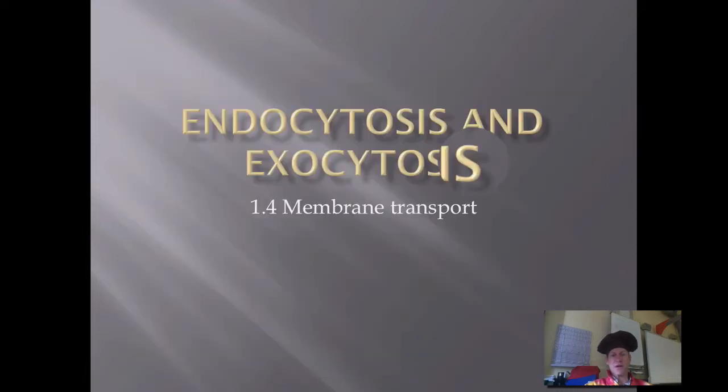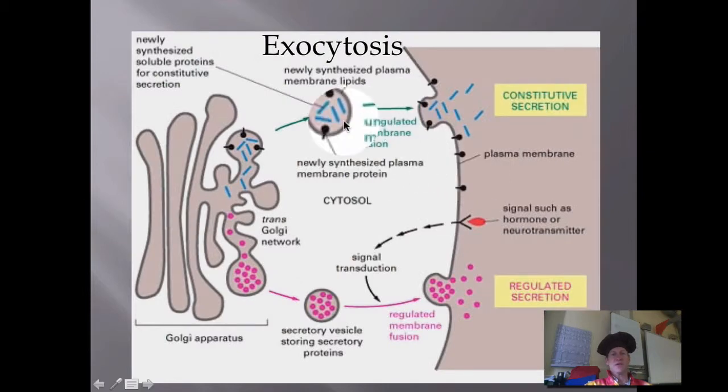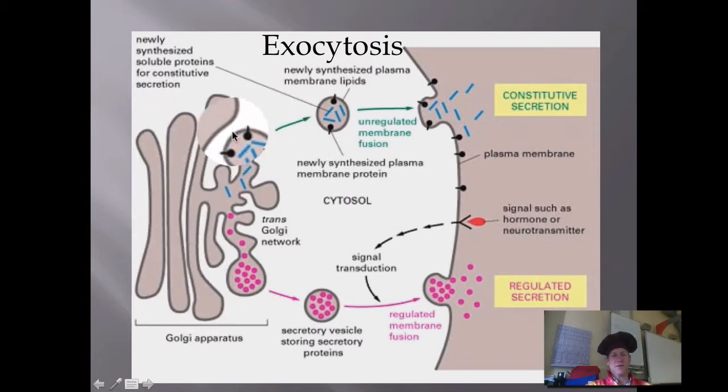Next I want to go over endo and exocytosis. So exocytosis is when particles are released from the cell. Just a quick review here is the Golgi apparatus, which is the organelle inside of the cell that receives a protein from the ER, the rough ER. That protein is repackaged for shipment, and there's two possibilities.